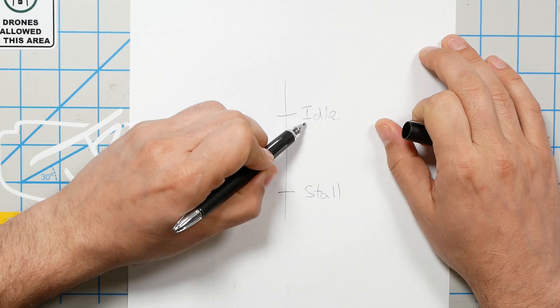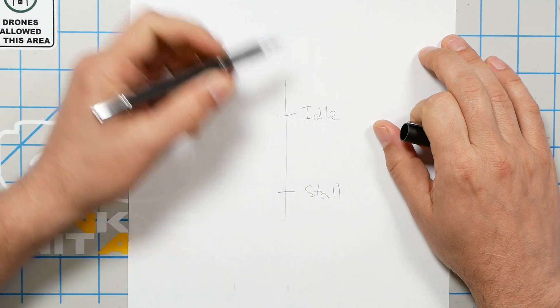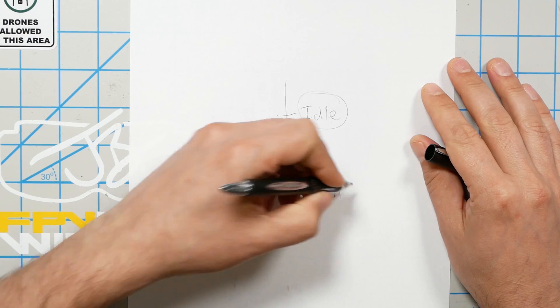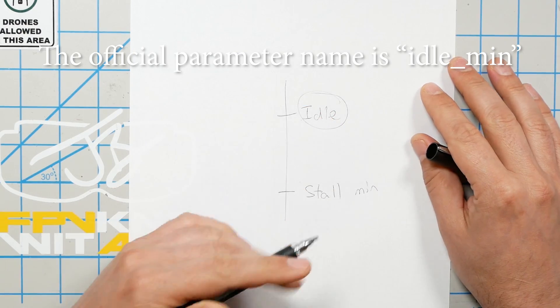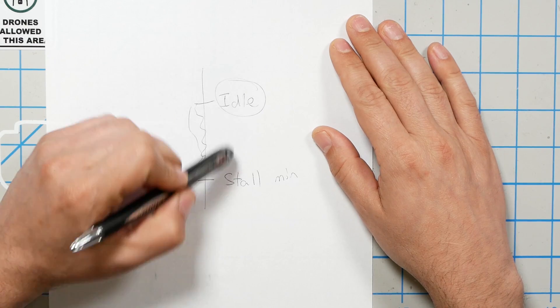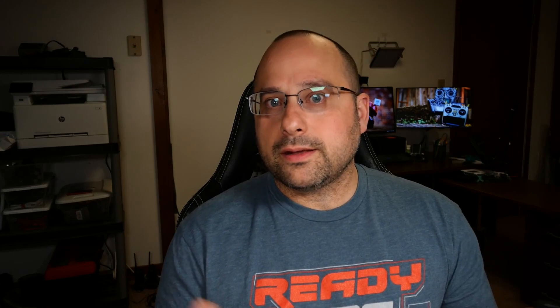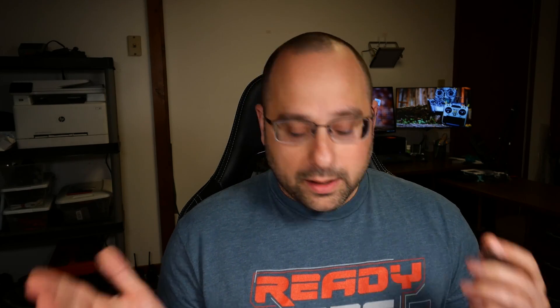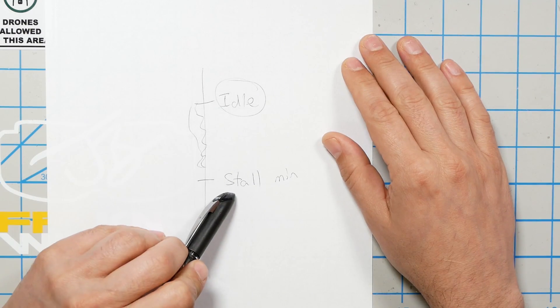Dynamic Idle lets you define two different parameters: a target idle speed, analogous to your current idle percent, and a minimum — the stall speed, also known as idle_min — that is the absolute slowest the motors can be allowed to go before they stall. To get Dynamic Idle working you need two numbers: the idle percent you're already using (found in the configuration tab), and the RPM at which your motors stall. I'll show you how to get that from the motors tab in Betaflight.